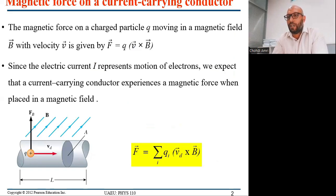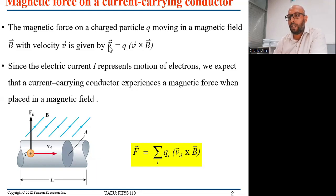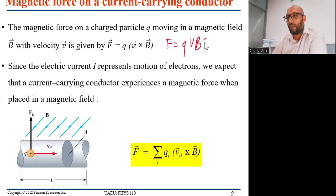As you know, the magnetic force on a charged particle Q moving in the magnetic field B with velocity V is given by F = Q(V×B). Q is the charge of the particle, V is the velocity vector, and B is the magnetic field. The force is perpendicular to both the velocity vector and the magnetic field vector. Its magnitude is |Q|VB sinθ.